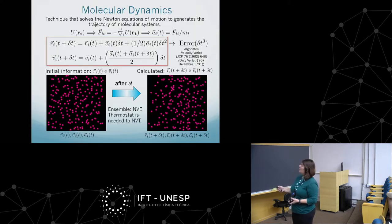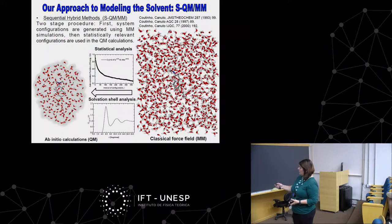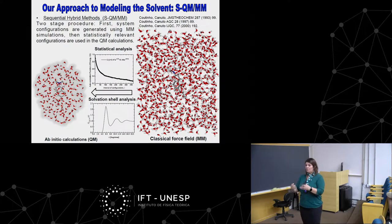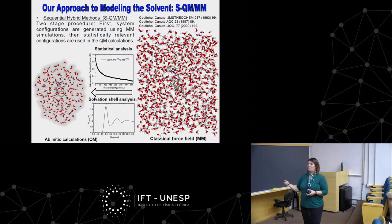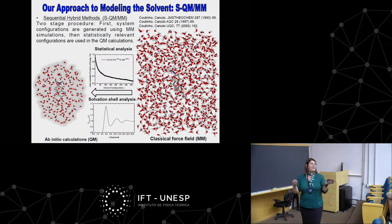When thinking about this two-step methodology, the classical potential must be set up before performing the quantum calculations. This means we have no information about the electronic interaction of the environment with the molecule before performing the simulation — the two methods are uncoupled from each other. The idea is to make the electronic property of the molecule respond to the environment and couple them together.